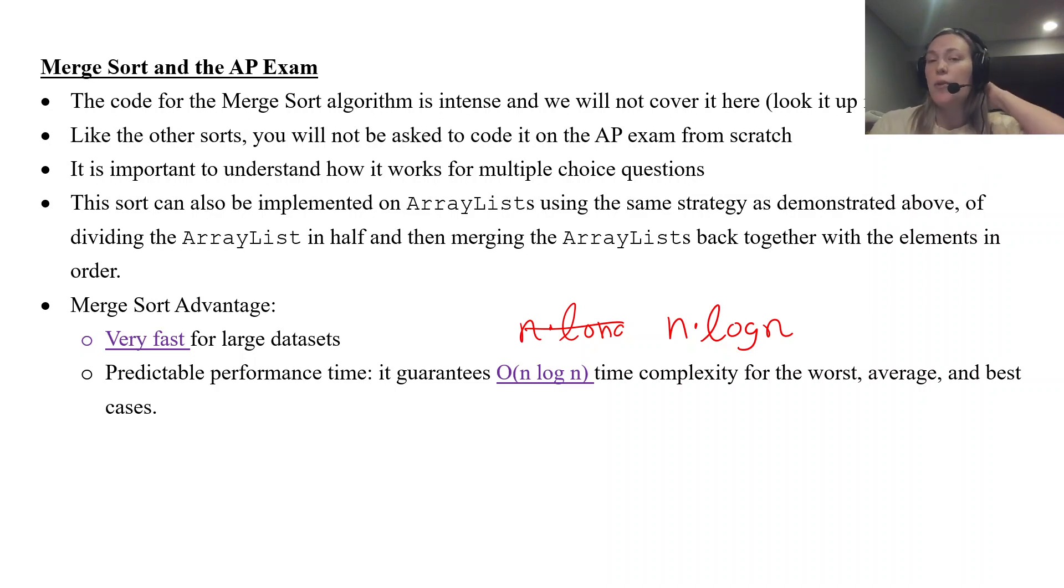For the insertion sort, the best was an n and the worst was an n squared. For selection sort it's actually just n squared for worst, average, and best cases. Either way, this has a higher performance time than our n squared. So the merge sort is very fast for large data sets.